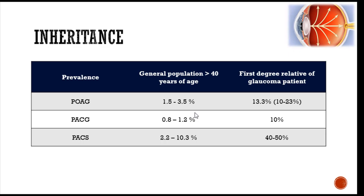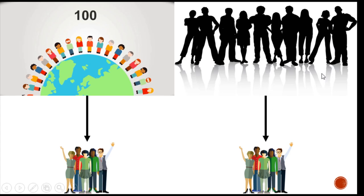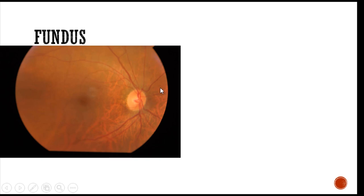Since we cannot screen the entire general population with all these investigations, we need targeted screening. Literature conclusively shows glaucoma runs in families. The chance of a relative of a glaucoma patient developing the disease is around 13%, which is 3 times the population prevalence. For angle closure glaucoma it is 10 times — about 10% among relatives versus 1% in the general population. Screening 100 general population members yields about 5 patients, whereas screening just 10 relatives of a known patient yields the same result.